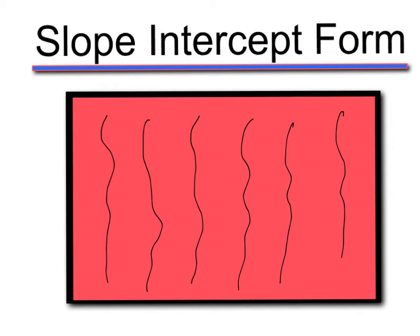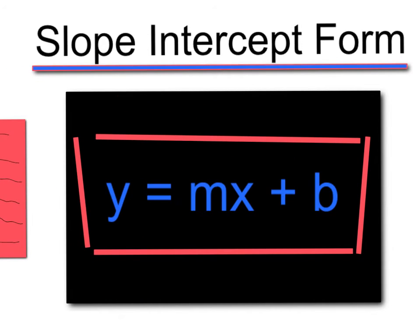Drum roll, please. There she is in all her glory. Slope intercept form. Y equals MX plus B.